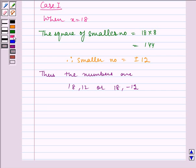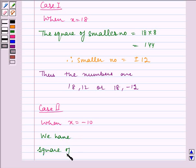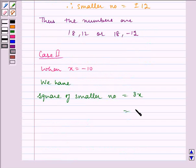Now, case 2. When x is equal to minus 10, we have square of smaller number is equal to 8x which is equal to 8 into minus 10 which is equal to minus 80.